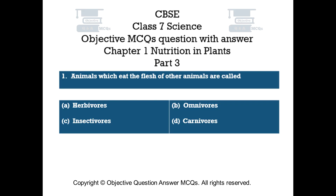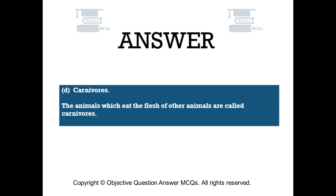Question number 1. Animals which eat the flesh of other animals are called. Option A: Herbivores. Option B: Omnivores. Option C: Insectivores. Option D: Carnivores. The right answer is option D: Carnivores. The animals which eat the flesh of other animals are called carnivores.